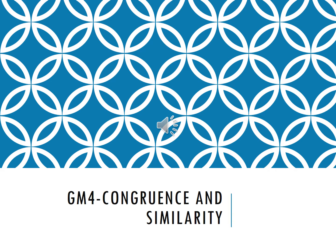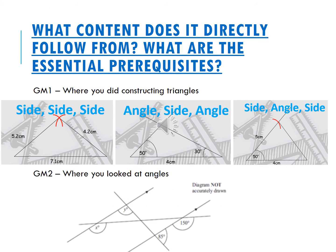Hello and welcome to GM4, Congruence and Similarity. In order to study this unit, you need to know some things. You need to know about GM1, where we did constructing triangles: side-side-side triangles, angle-side-angle triangles, and side-angle-side triangles.